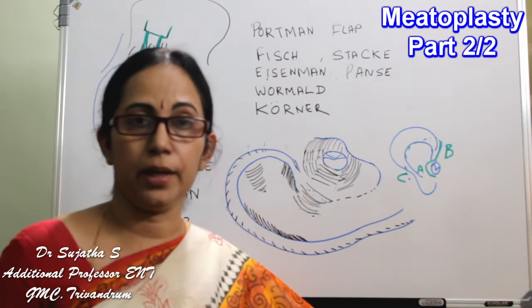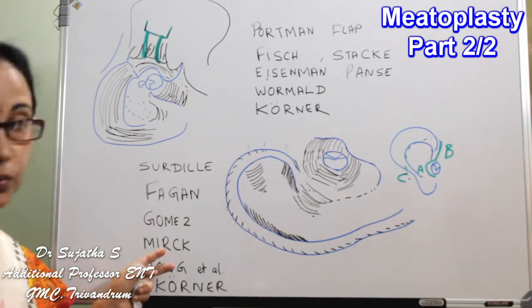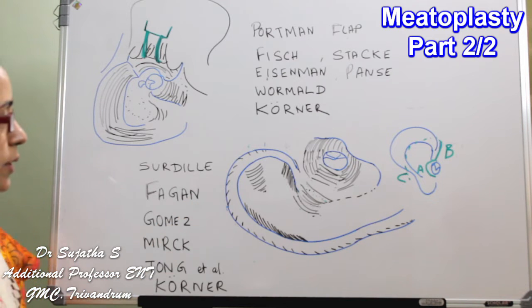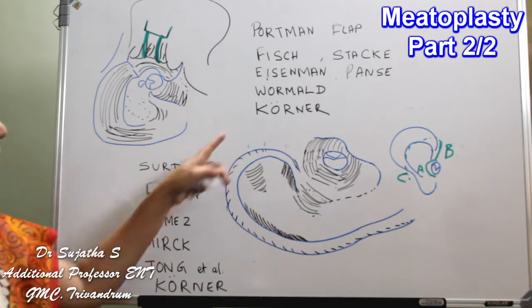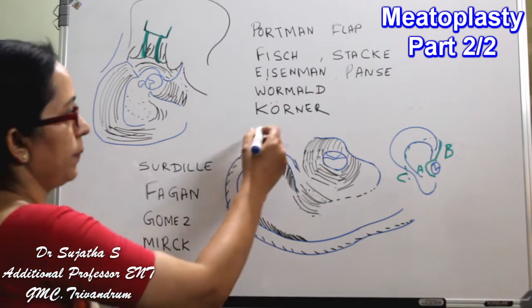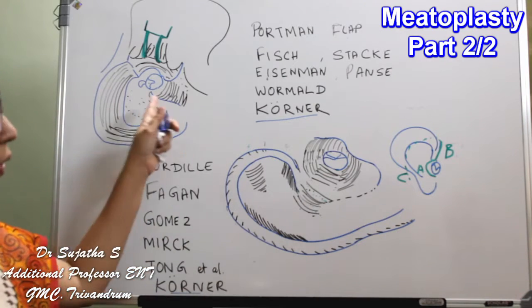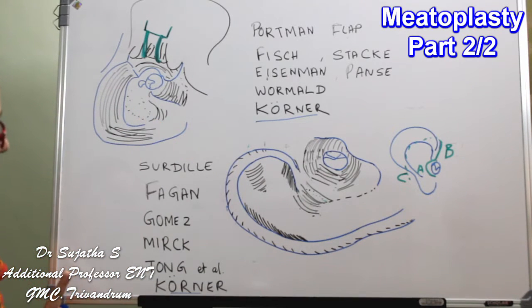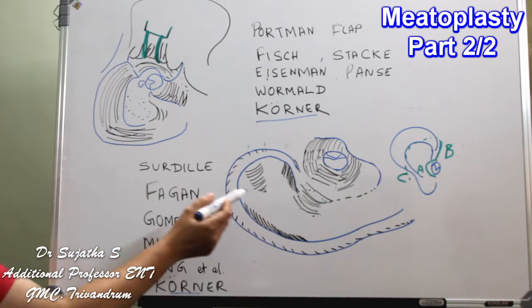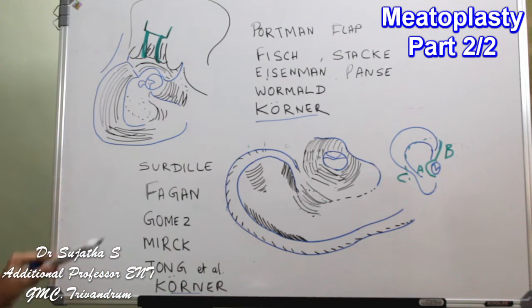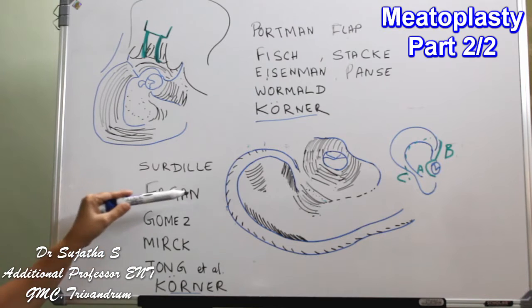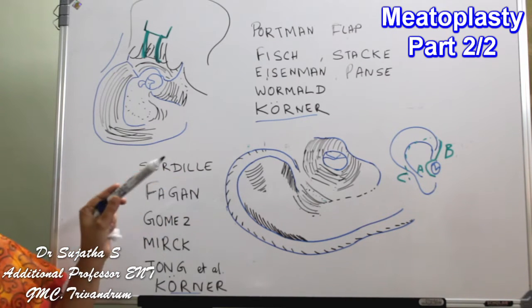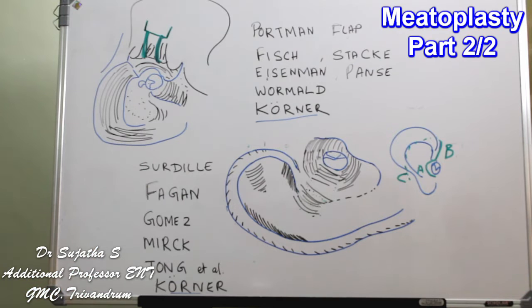In both cases, the creation of the flap differs, and there are different names for each flap. The commonly used flap in both endoaural and postaural approaches is the corner flap. The sardine flap is used for endoaural, along with Phagan, Gomas, Milk flap, and Tong et al. — all these are flaps used when going for mastoid exploration under an endoaural approach.